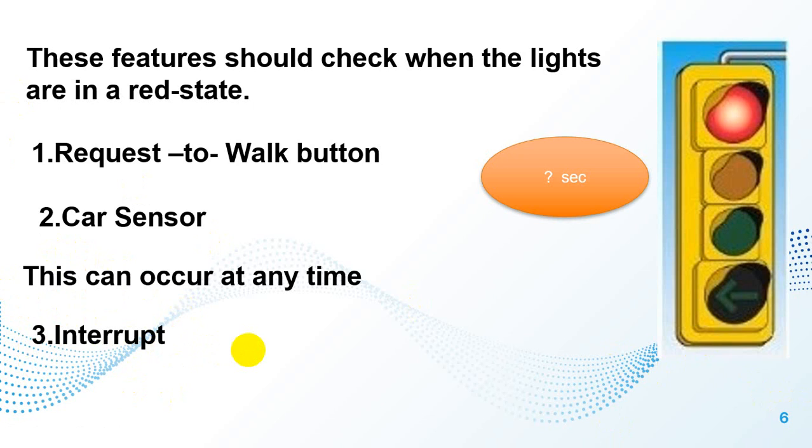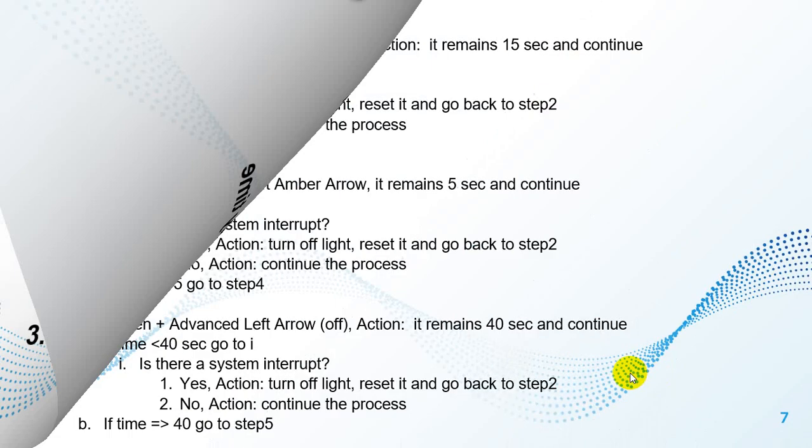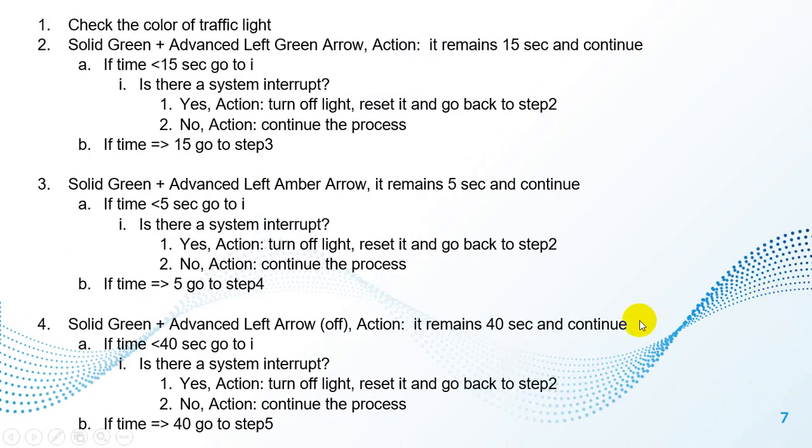So I want to describe the pseudocode for each state. First of all, as you know, in pseudocode we should explain each condition and each circumstance in each state. First of all, the traffic light should check the color.